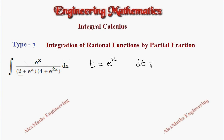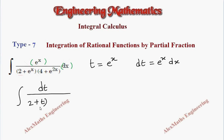From this, we can find dt, which is e power x into dx. We find e power x into dx in the numerator, so we will replace everything in terms of t. The integral becomes dt divided by 2 plus t, and the other term 4 plus e power 2x becomes 4 plus t squared, since e power 2x is e power x whole square.